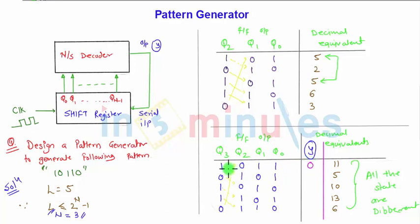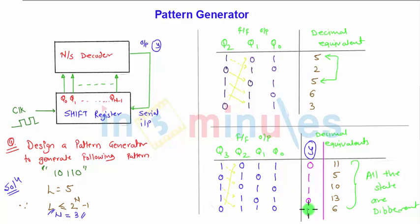After shifting 1-0-1-1-0, the next Y should be 1, then 1-0 and 1. This completes the Y column. Now we need to define the output logic for Y by solving the K-map with 4 inputs.